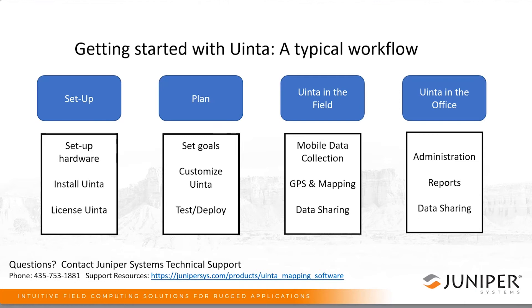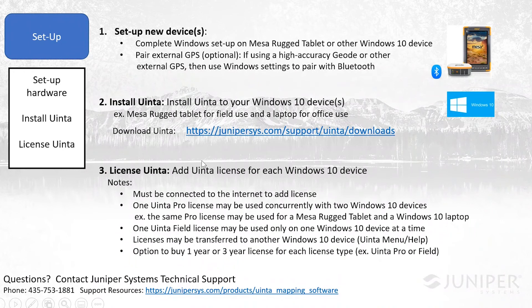The first category is setup, which generally includes three steps. The first step is to set up your hardware — you might have a Mesa rugged tablet or some other Windows 10 device. You'll go through the Microsoft setup process, and it's important to set preferences on that mobile device: making sure your screen isn't going to sleep, and that your virtual keyboard has the most efficient data entry layout for your scenario. If you're using an external GPS like our high accuracy Geode, this is where you'd use Windows Bluetooth pairing, just like pairing a headset.